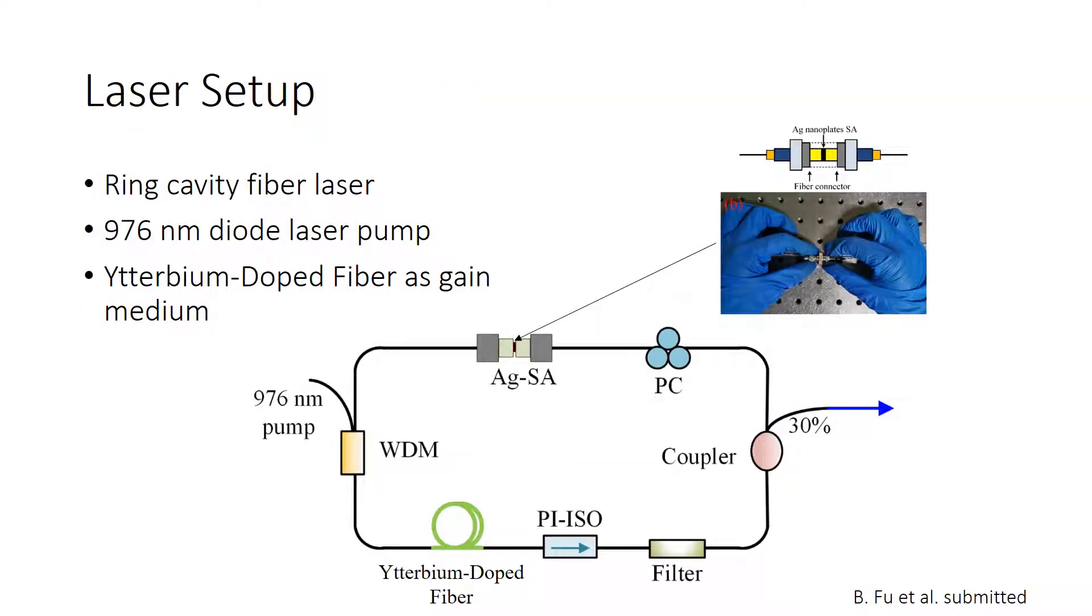Here is our laser setup. This is a ring cavity fiber laser. The pump is a diode laser at 976 nanometers and the gain medium is an erbium doped fiber which gives a wavelength around a micron. Part of the cavity is a fiber connector where our silver nanoplates are deposited.